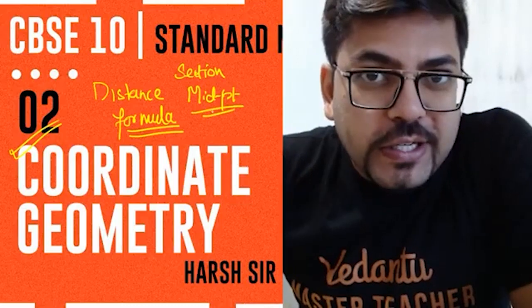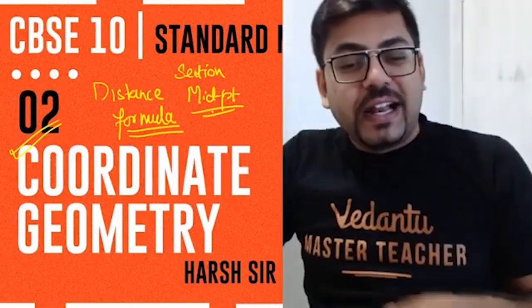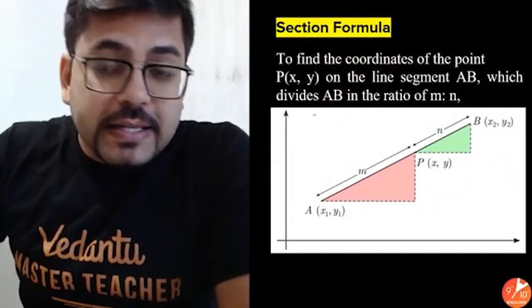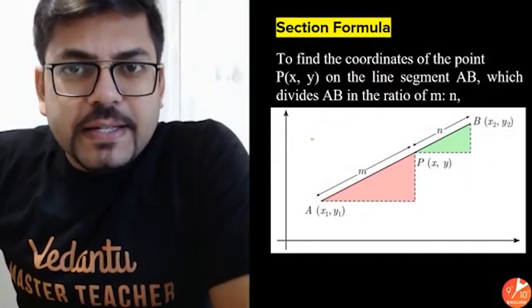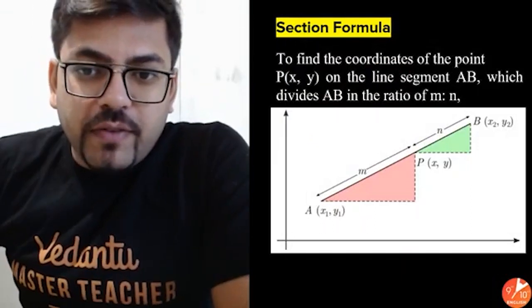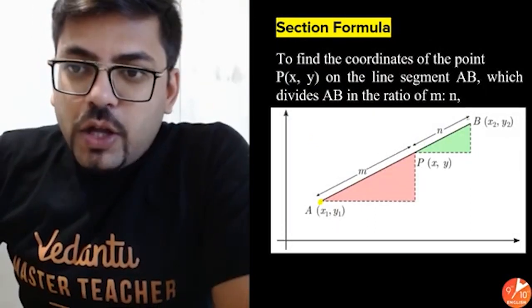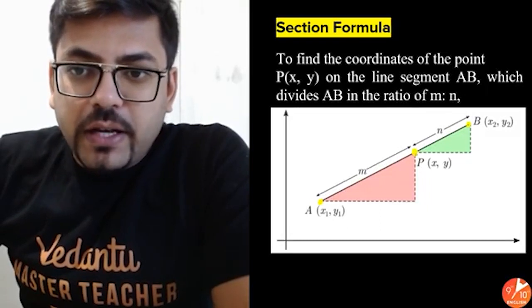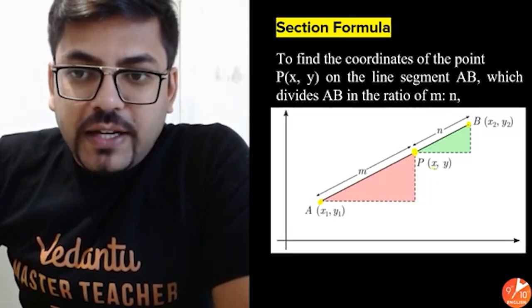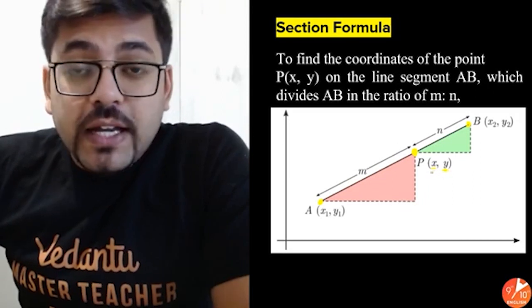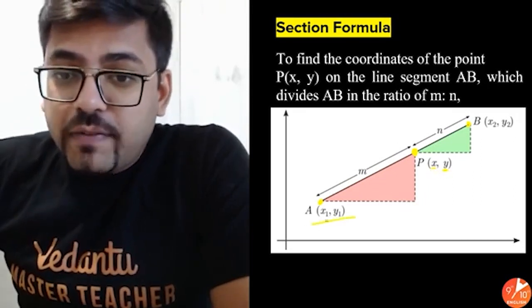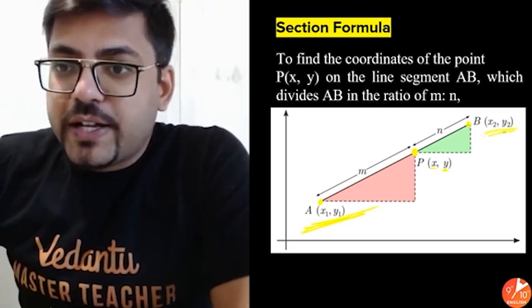So are we ready to start? Let's start our today's session without wasting any further time. The first thing is the section formula, and it is pretty easy: whenever there is a line segment AB and that line segment AB is being divided by a point P — say for example here — so this point P, if I name it X, Y.